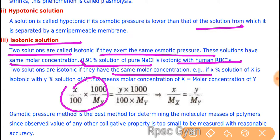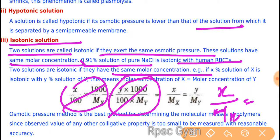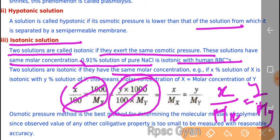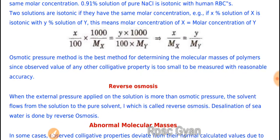Osmotic pressure method is the best method for determining the molecular masses of polymers, since the observed value of any other colligative property is too small to measure with reasonable accuracy. In reverse osmosis, the external pressure applied on the solution is more than the osmotic pressure, so solvent moves from solution to pure solvent — from higher concentration to lower concentration. Desalination of sea water is done by reverse osmosis.